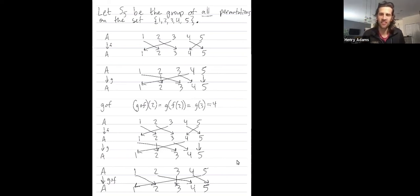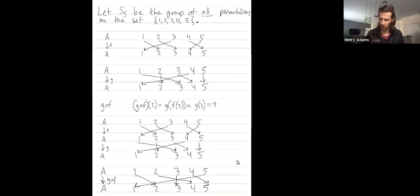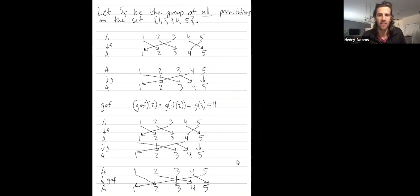Thanks so much. That's my introduction to permutations, which are one-to-one and onto functions from a set to itself, and also groups of permutations. For example, S5 is a group of all permutations on the set of numbers from 1 up to 5. And the group operation is composition of these permutations, which are functions. Thanks so much.